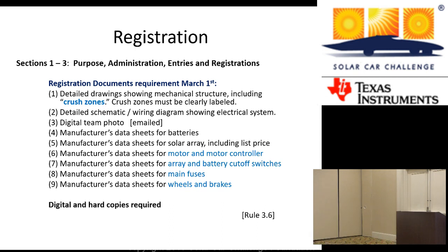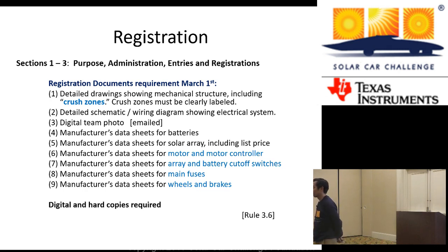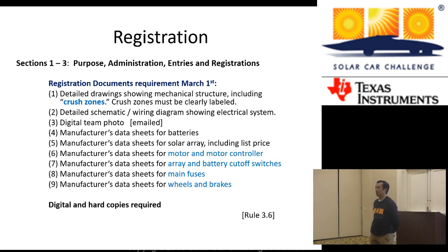For the March 1st deadline, the hard copy must be postmarked by March 1st. It can be delivered or arrive at the location after March 1st — it just needs to be sent by March 1st. If someone on the solar car judging team were to damage the hard copy, it doesn't matter — you've submitted your hard copy, that's sufficient. The responsibility is to send a hard copy; after that, if the copy gets damaged by us, it doesn't matter.